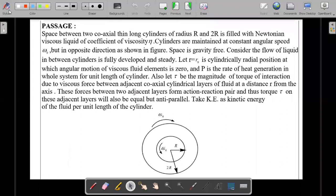So here's the formal wording. Space between two coaxial thin long cylinders of radius R and 2R is filled with Newtonian viscous liquid of coefficient of viscosity η. So this is the top view of that. So there is a liquid in between and these two cylinders are actually rotatable and the liquid's viscosity is η. Cylinders are maintained at constant angular speed ω₀ but in opposite directions as shown in figure. One is clockwise, another is anticlockwise, which is the main feature of the rotation viscometer where angular velocities of inner and outer cylinders would be different.